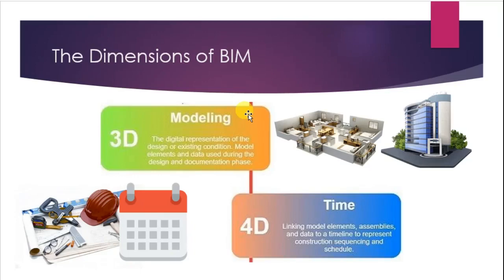Let's look at the 7 dimensions of BIM. What are these 7 dimensions? We can see the dimensions in this slide. The first dimension is location — for example, a pillar's location is the 1st dimension.